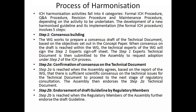ICH harmonization activities fall into four categories: the formal ICH procedure, the quality assurance procedure, the revision procedure, and the maintenance procedure. The revision procedure governs how existing guidelines are revised and maintained. The development of a new harmonized guideline and its implementation — the formal ICH procedure — involves five steps.